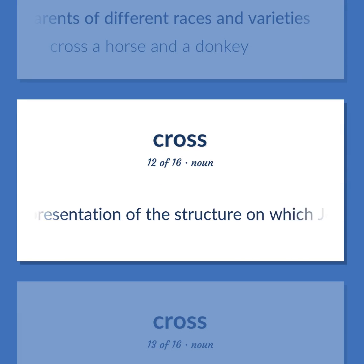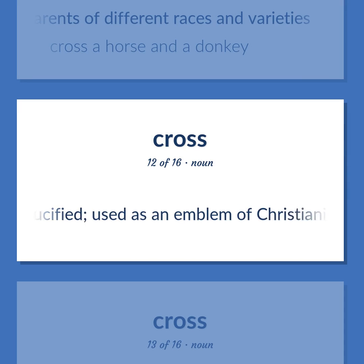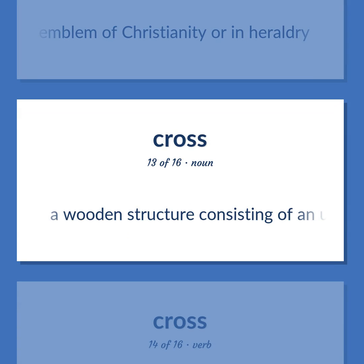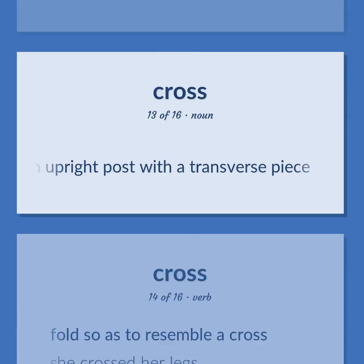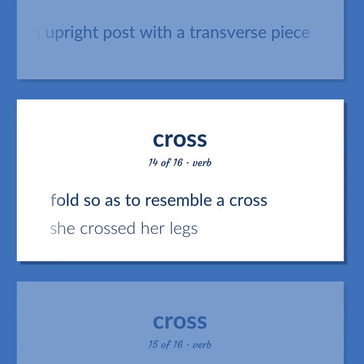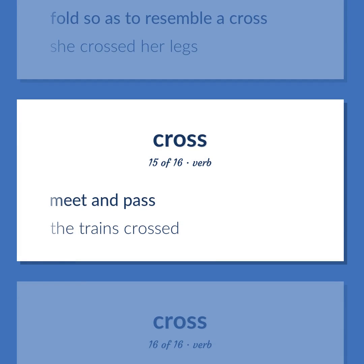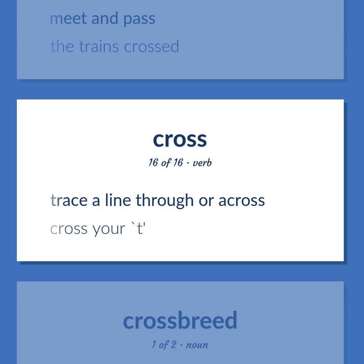A representation of the structure on which Jesus was crucified, used as an emblem of Christianity or in heraldry. A wooden structure consisting of an upright post with a transverse piece. To fold so as to resemble a cross — e.g., 'She crossed her legs.' To meet and pass — e.g., 'The trains crossed.' To trace a line through or across — e.g., 'Cross your T.'